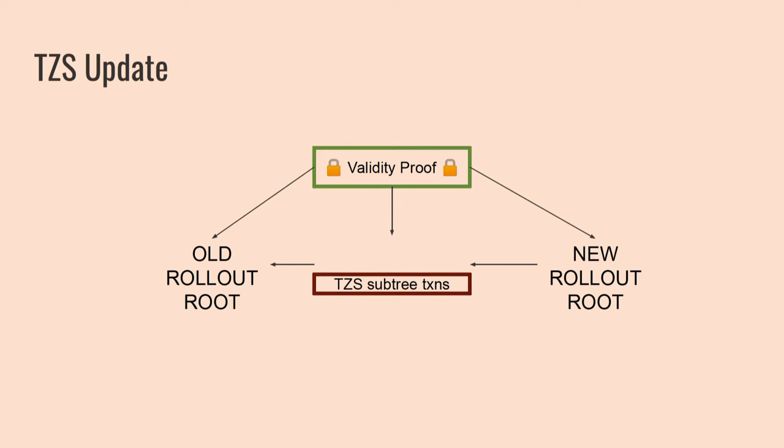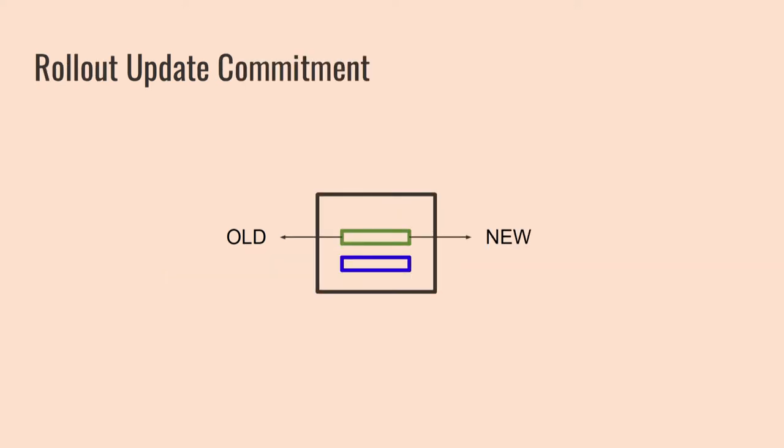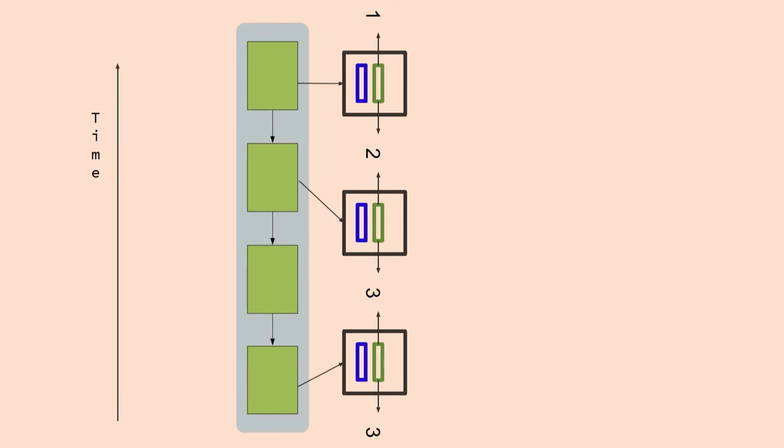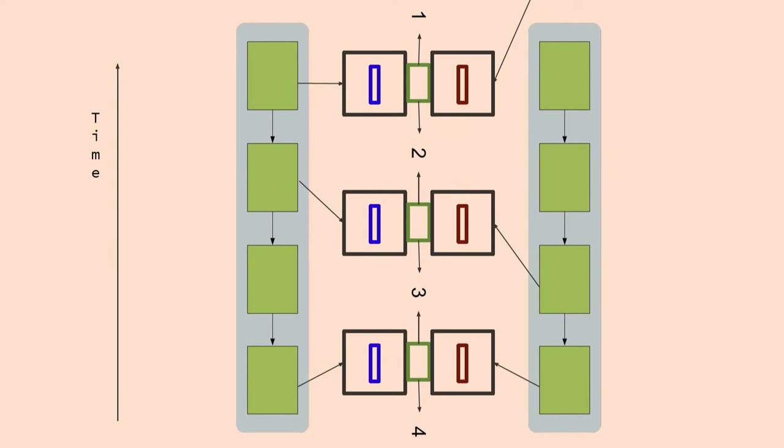So the Tezos chain sees the Tezos sub-tree transactions, the Ethereum chain sees the Ethereum sub-tree transactions, but they all see a proof that the whole tree progressed correctly. So I can move my Ether in and out of the Ether sub-tree, I can move it from the Ether sub-tree to the Tezos sub-tree, and I can move it out from the Tezos sub-tree to the Tezos chain. At each step, every chain sees a proof that the whole tree moved correctly. What they don't see is transactions affecting other sub-trees.